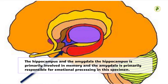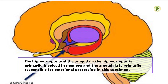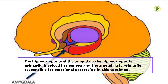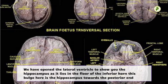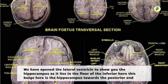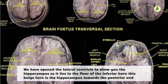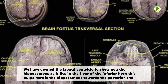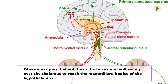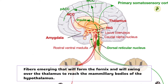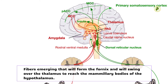The hippocampus and the amygdala: the hippocampus is primarily involved in memory and the amygdala is primarily responsible for emotional processing. In this specimen we have opened the lateral ventricle to show you the hippocampus as it lies in the floor of the inferior horn. This bulge here is the hippocampus towards the posterior end, with fibers emerging that will form the fornix and swing over the thalamus to reach the mammillary bodies of the hypothalamus.